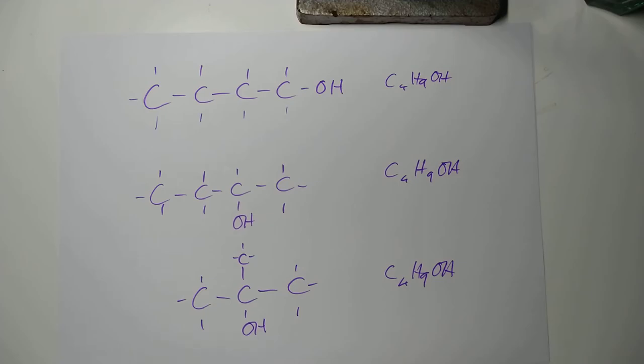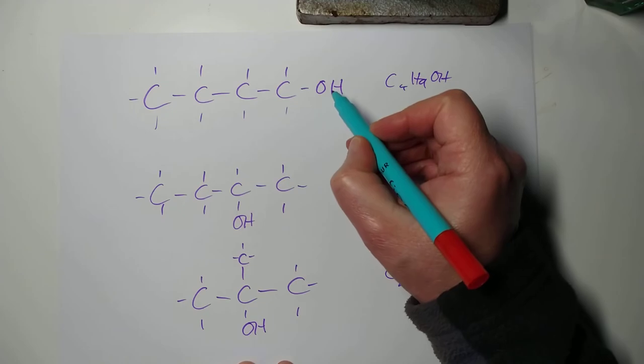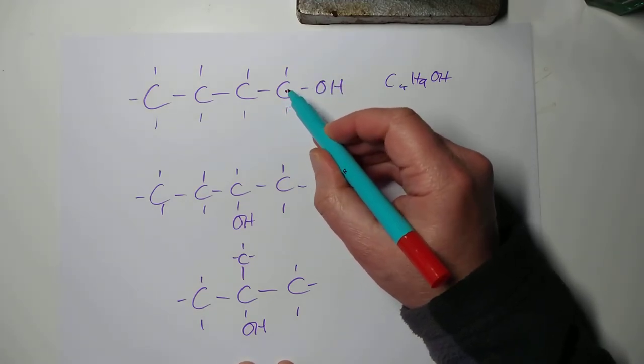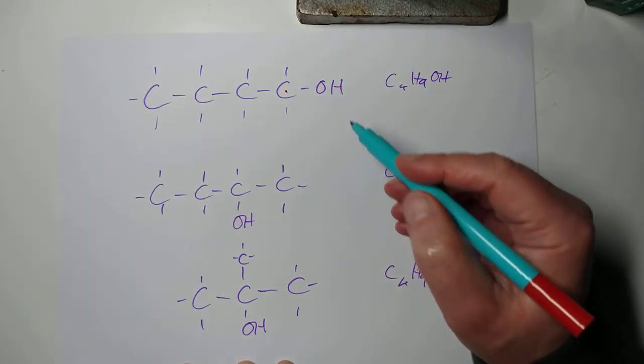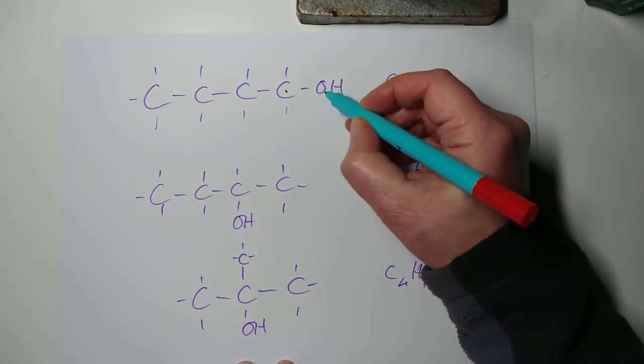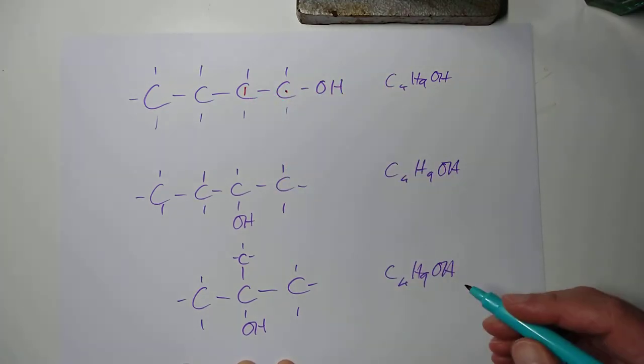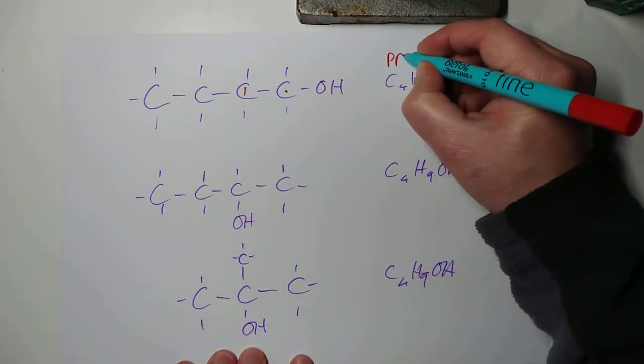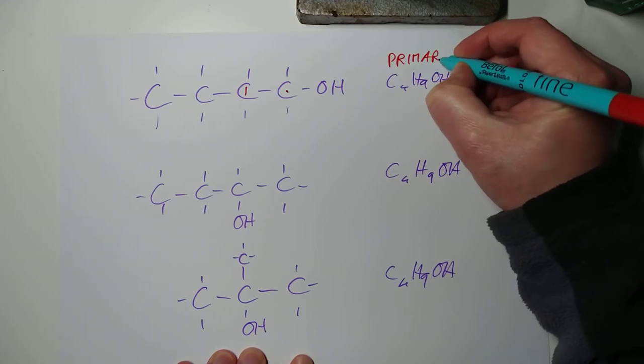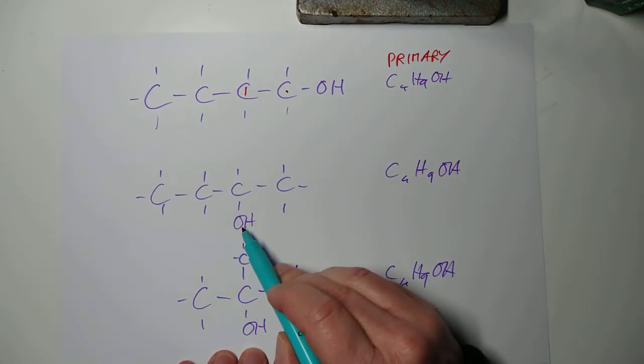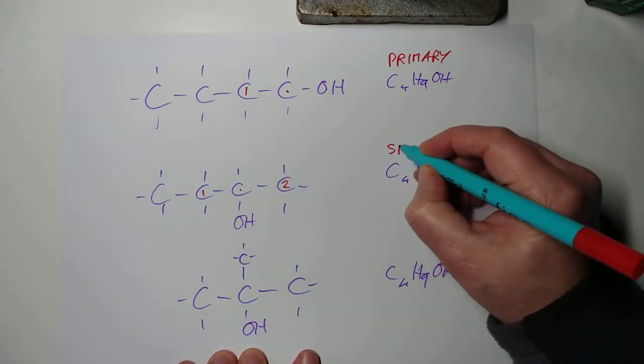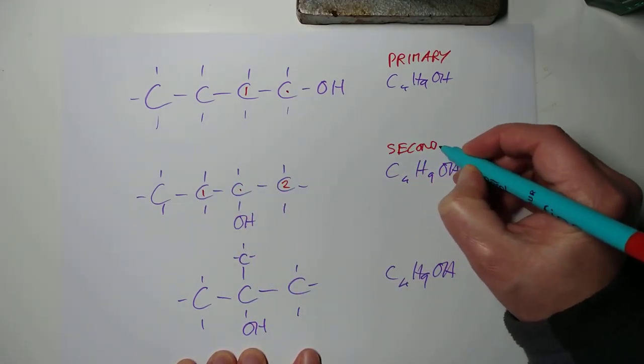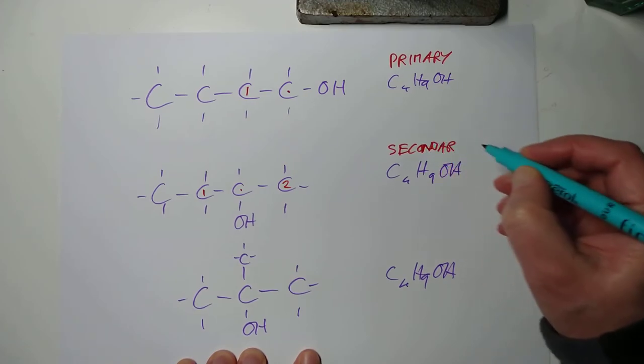Now, we classify these three types of alcohol based upon how many carbons are attached to the carbon that's bonded to the hydroxyl. That's a little bit clumsy, but if you have a look at this, this is the carbon that's bonded to the hydroxyl and it is attached at the moment to only one carbon. So, these are called primary alcohols. This hydroxyl attached to this carbon and this carbon is attached to one, two other carbons. So, these are called secondary alcohols.